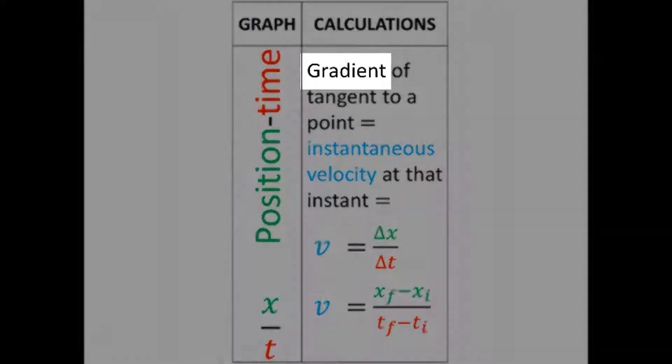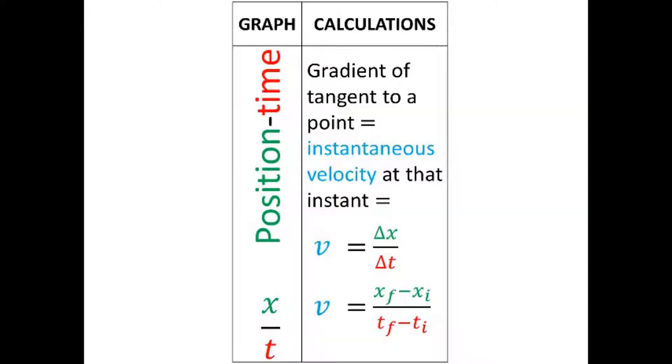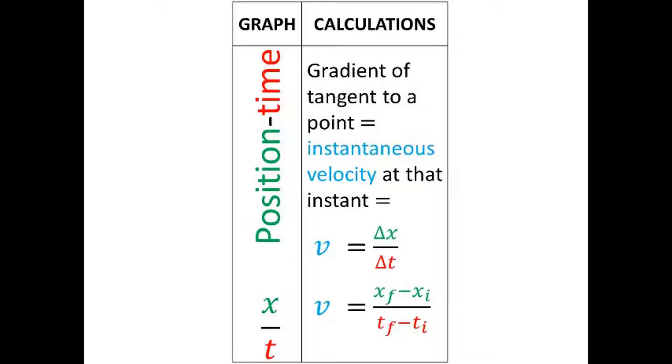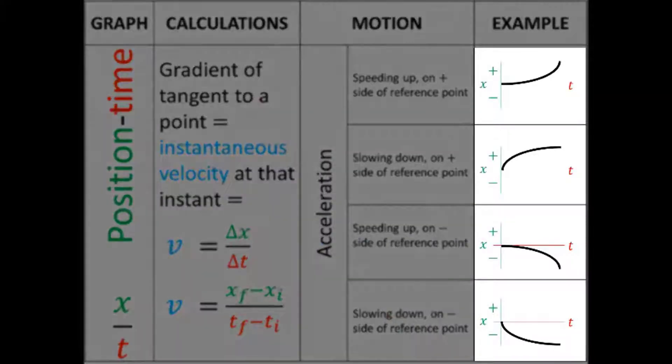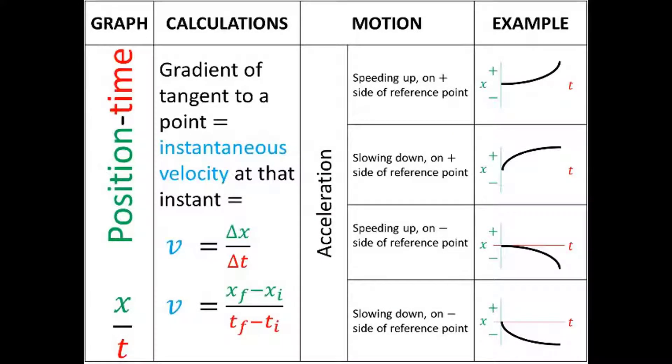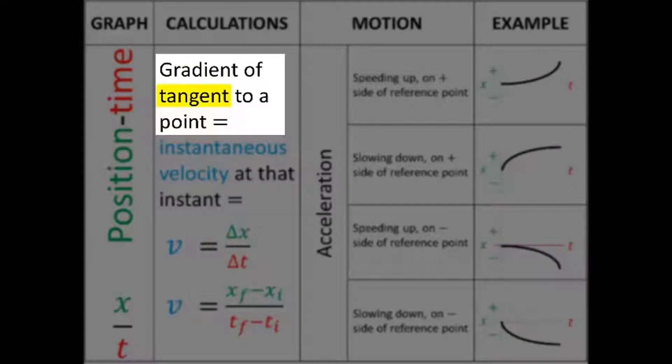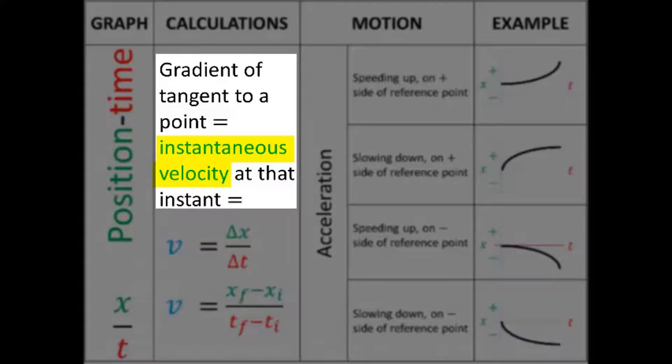Remember that the gradient of a position-time graph tells us velocity. For accelerated motion, a position-time graph has a curved line. Why? Because the velocity is always changing during accelerated motion, so the gradient must always change. So for accelerated motion, an x-t graph, the gradient of a tangent to a point tells us the instantaneous velocity at that instant.